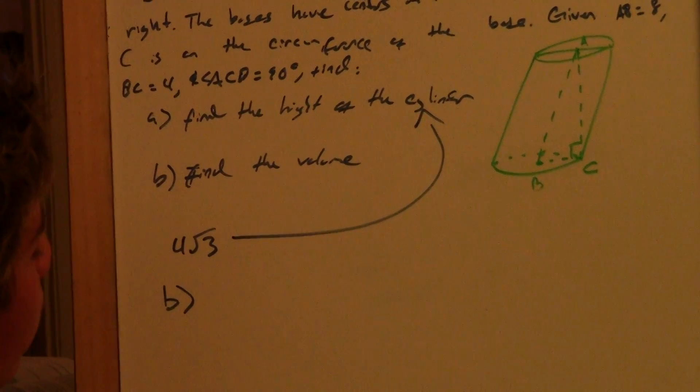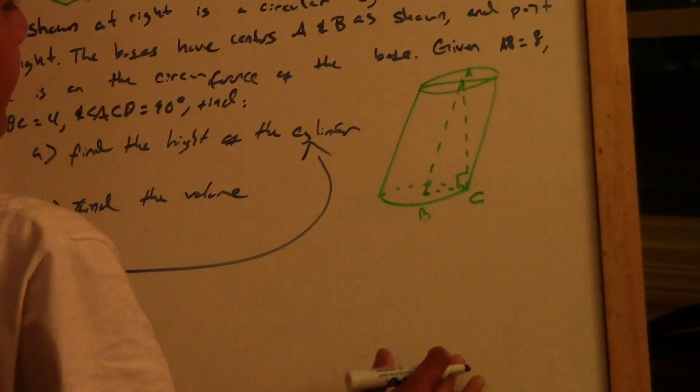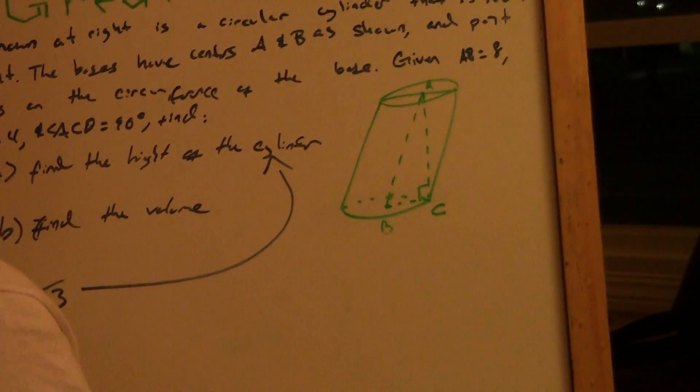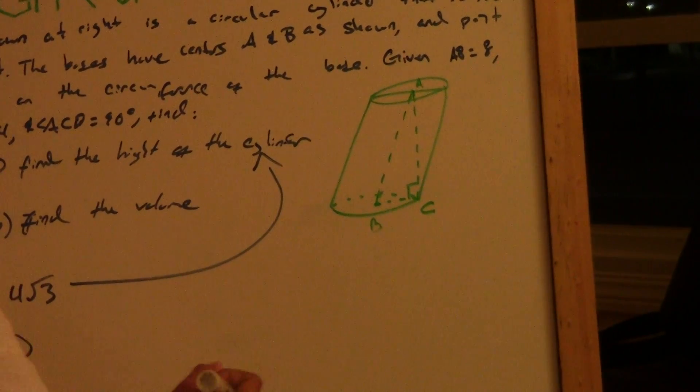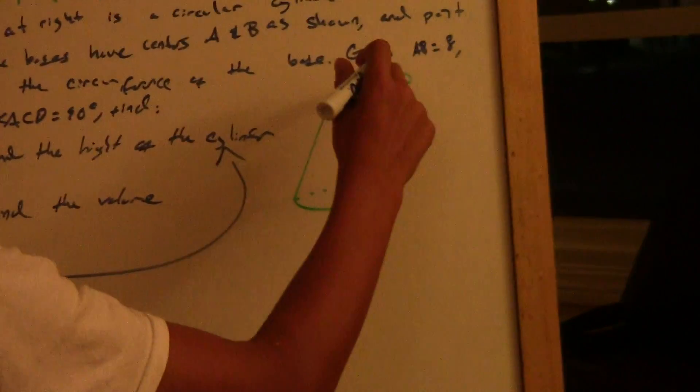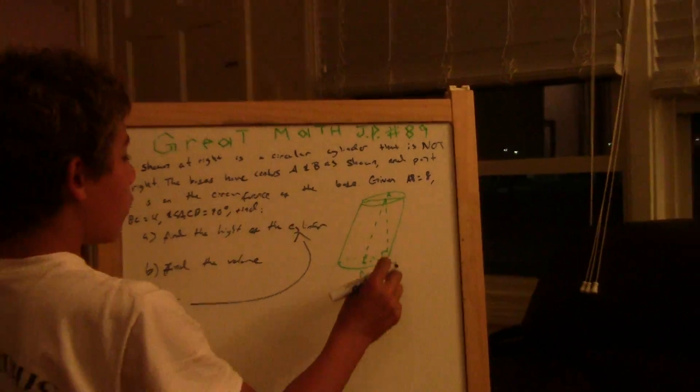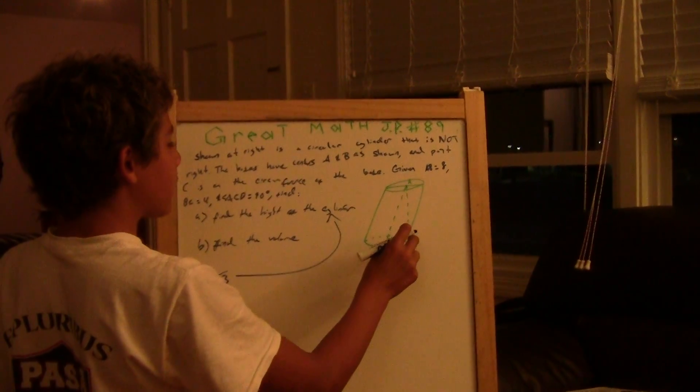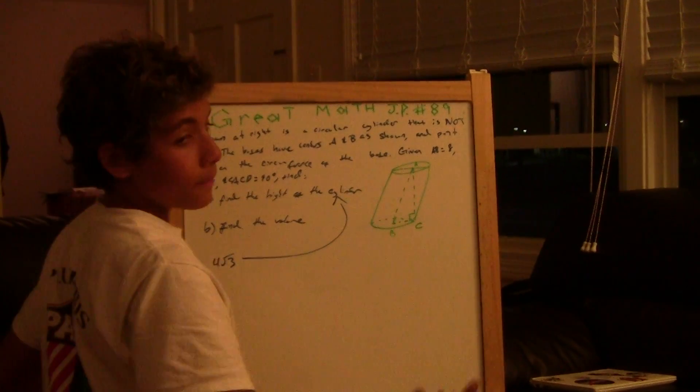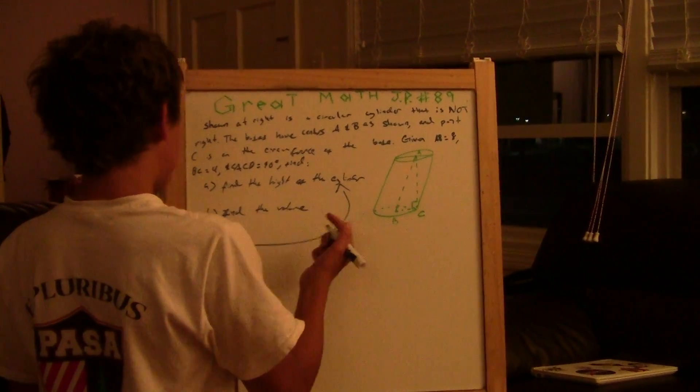The bases have centers A and B as shown. There's A, that's B, and point C is on the circumference of the base. Given that AB is equal to 8, BC is equal to 4, and angle ACB is equal to 90 degrees. Find the height of the cylinder and the volume.